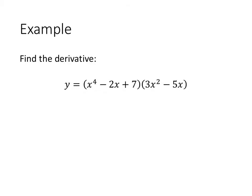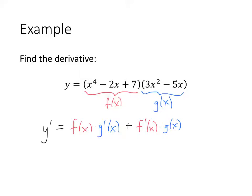Okay, let's see this in action. So here's my first function, f of x, and here's my second function, g of x. So according to my product rule, y prime is going to be f times g prime plus f prime times g. So f is simply the f function, I don't change it at all, just leave it the way it is, x to the fourth minus 2x plus 7, times the derivative of g, so g is 3x squared minus 5x, so the derivative of that is 6x minus 5.